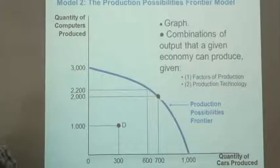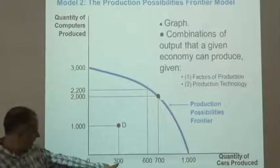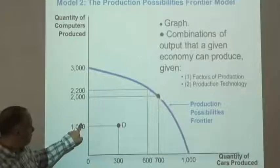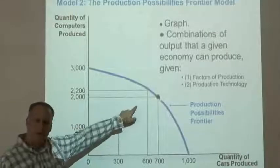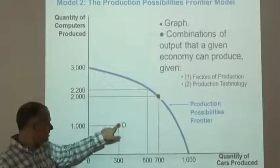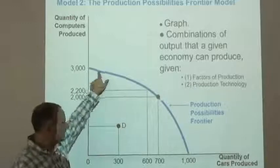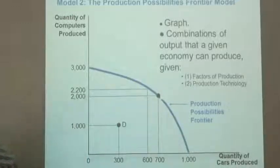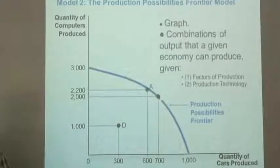We also can see that it's possible for the economy to produce 300 cars and 1,000 computers, but it could do better. These things are attainable by the economy. In fact, everything inside our production possibilities frontier is what's attainable.